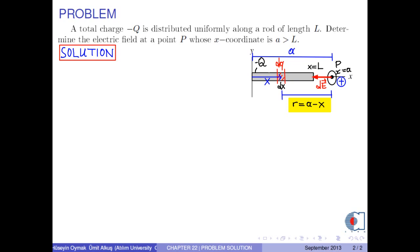Therefore, the total electric field due to the road at point P is calculated by the formula: integral of dE negative î-hat, because it is in the negative x direction.